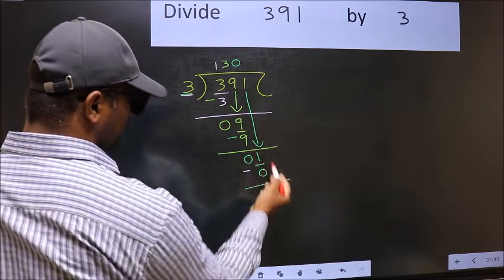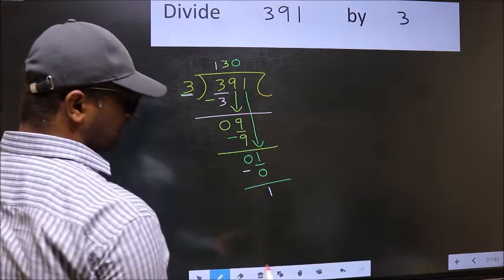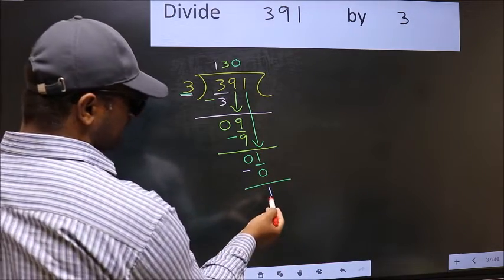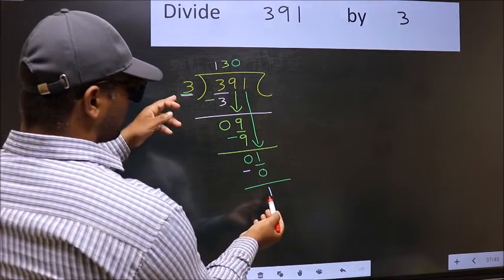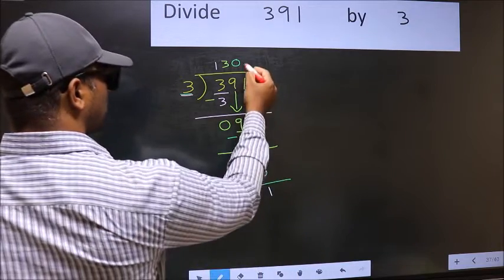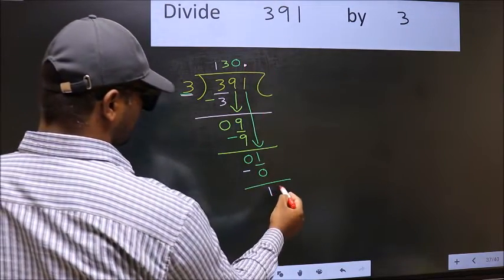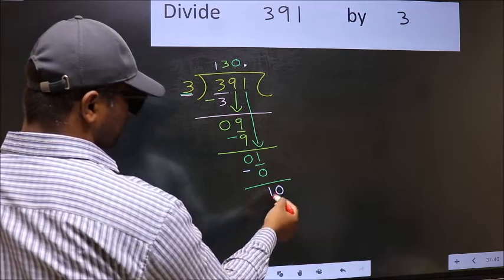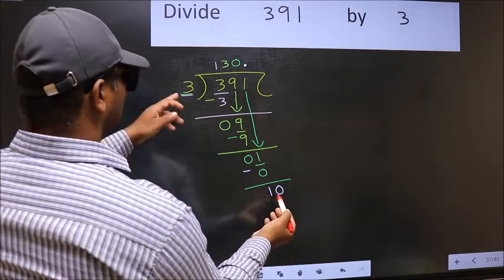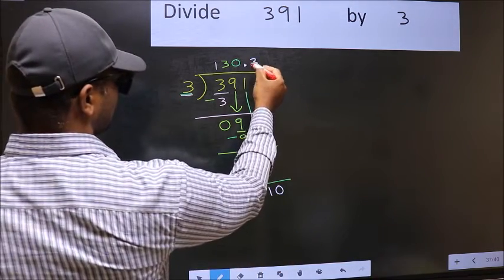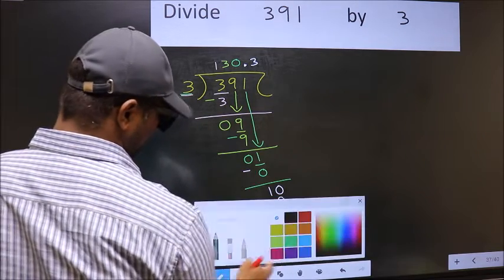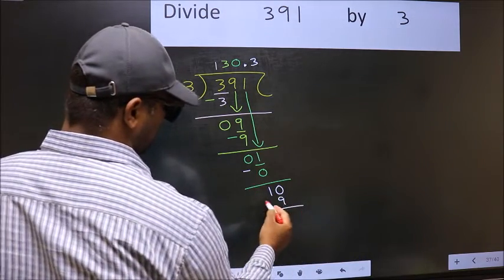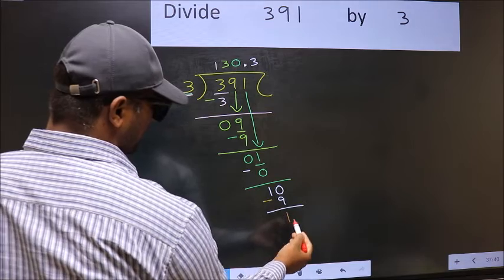Over here, we did not bring any number down. And 1 is smaller than 3. So now you can put a dot and take 0. So 10. A number close to 10 in the 3 table is 3 times 3 is 9. Now we should subtract. 10 minus 9, 1.